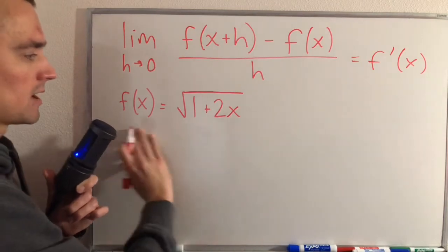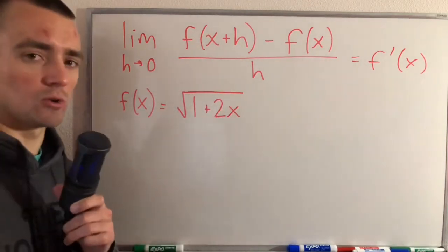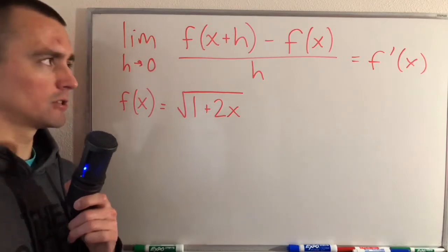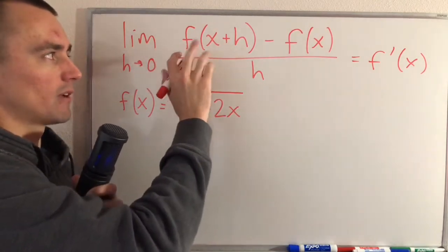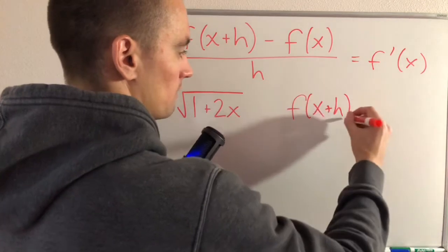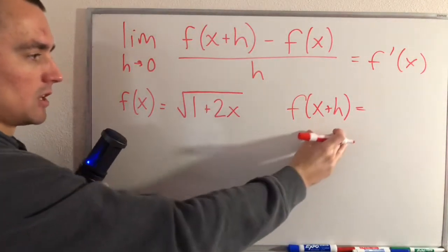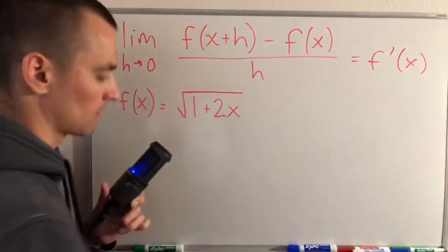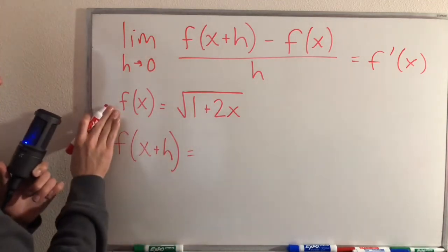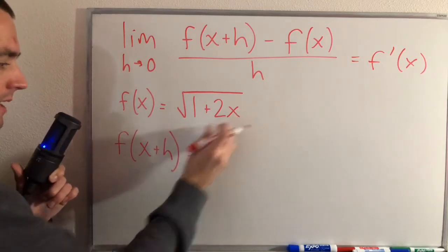So what we're going to do is find the derivative of the square root of 1 plus 2x using this limit definition. The first thing you want to do when using the limit definition to find the derivative of a function is figure out f of x plus h. To figure out f of x plus h, all you have to do is go to your function f of x and replace all the x's with x plus h.